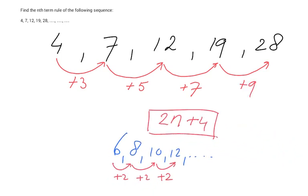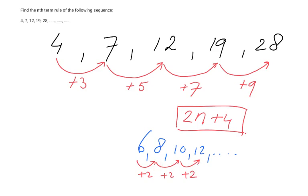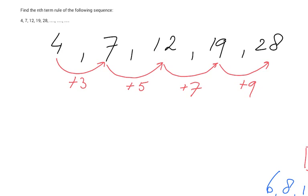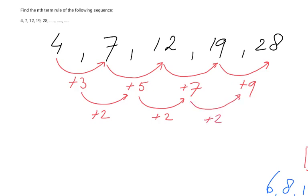Now it's plus 3, plus 5, plus 7, plus 9 — it's not constant. Don't worry, don't panic. You're just going to do it again. What is the term-to-term rule from 3 to 5? That is plus 2. From 5 to 7? That is plus 2. From 7 to 9? That is plus 2. Now you have a constant term-to-term rule. You have to continue doing this until you have a constant term-to-term rule.